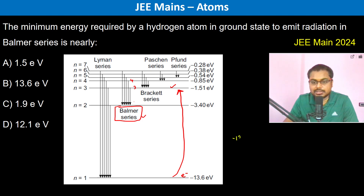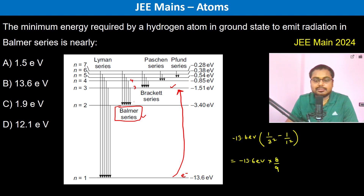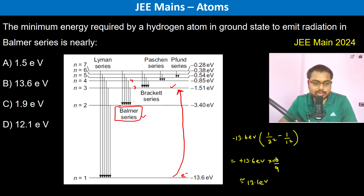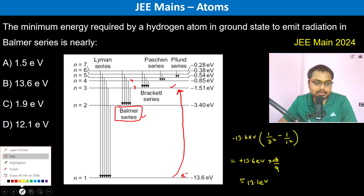The minimum energy required is: E = −13.6 eV × (1/3² − 1/1²), which equals −13.6 eV × (8/9), and that is almost around 12.1 electron volts — so positive 12.1 eV is the minimum energy required.